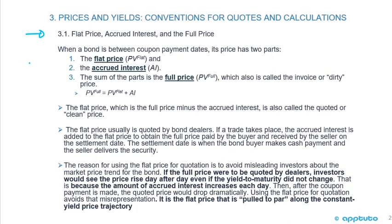When a bond is between coupon payment dates, its price has two parts: the flat price and the accrued interest. The sum of the parts is the full price. When you're between coupon payment dates, the flat price plus accrued interest gives you the full price, which is also called the invoice or dirty price.